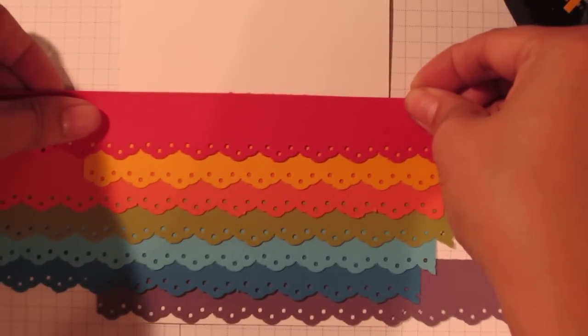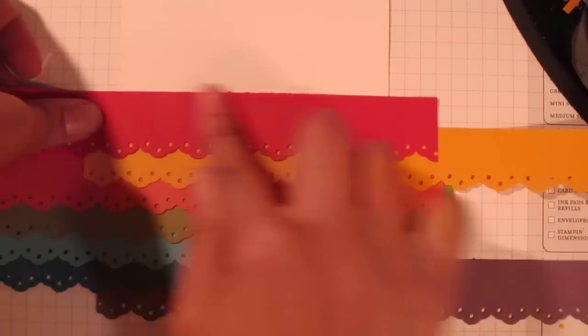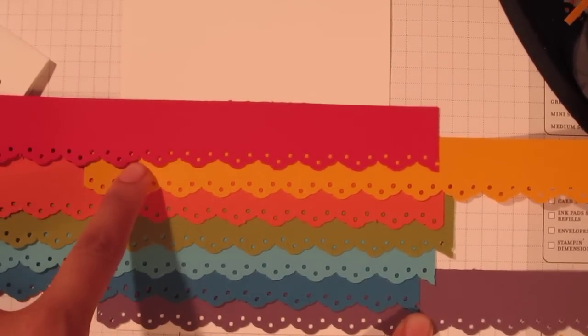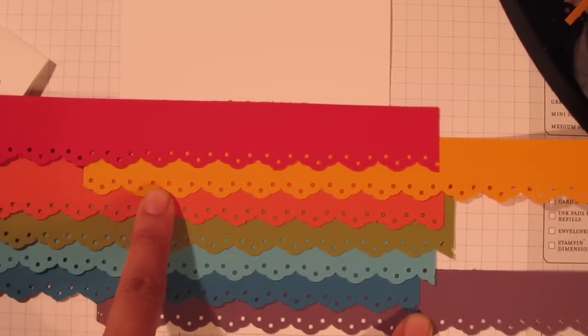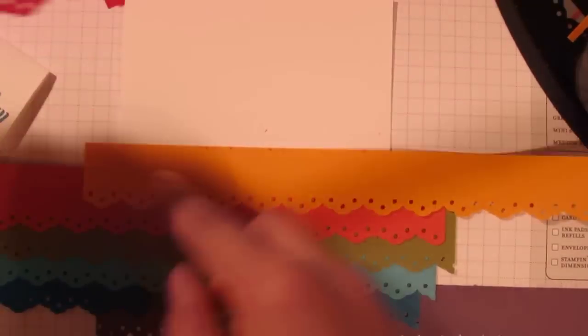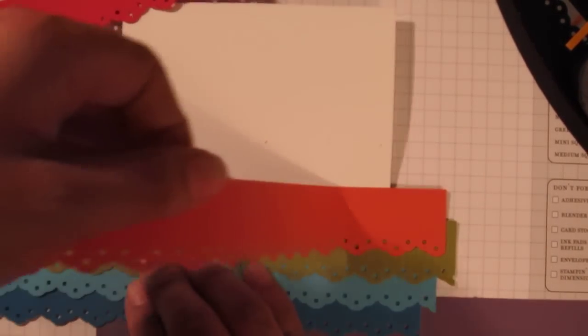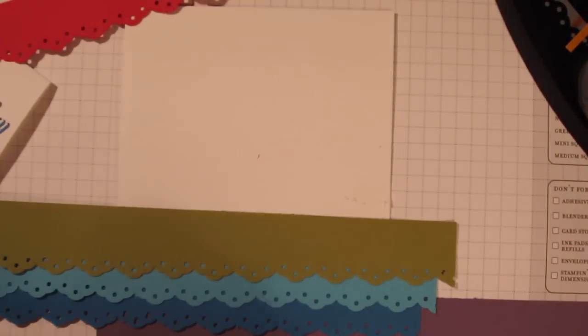Stagger that. Perfect. There. Now we have our ROYGBIV. Red. Orange. Oops. We don't have ROYGBIV because I messed that up. I'm just going to peel these up really quick and switch the places.